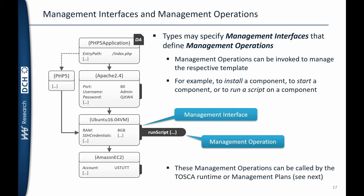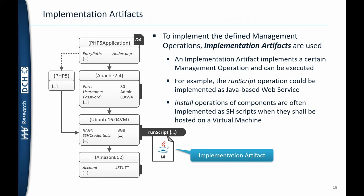It is also possible to specify management interfaces and management operations. Node types define lifecycle interfaces to install, configure, start, and stop a component. For example, the Apache 2.4 node type defines an install operation which installs Apache 2.4 on the Ubuntu VM. Additionally, you can define custom management operations — for example, an operation able to run arbitrary scripts on the Ubuntu VM. These can be implemented using web services such as a Java web service, and these are called implementation artifacts. Implementation artifacts are similar to deployment artifacts, but instead of containing files, they implement management operations.